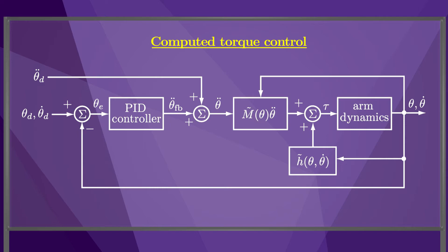For example, PD feedback control plus gravity compensation can provide good performance, and it is much less computationally expensive to evaluate a model of gravitational torques than it is to compute a full dynamic model.